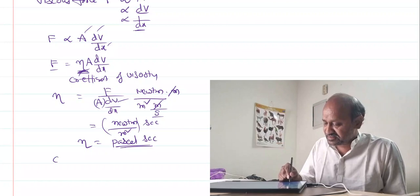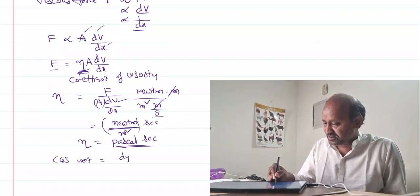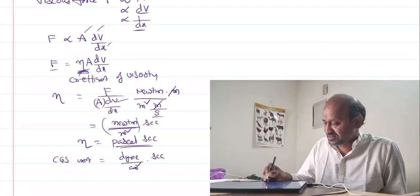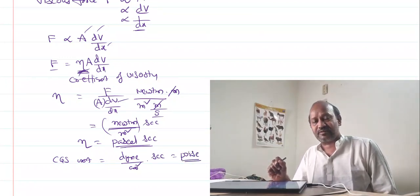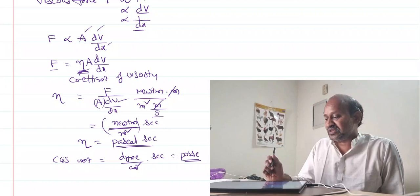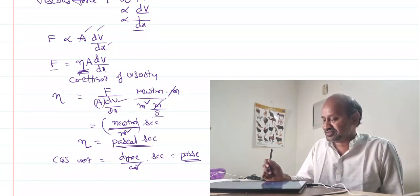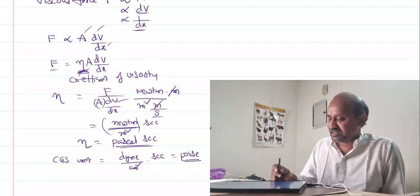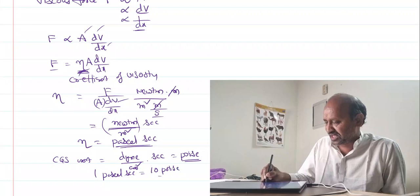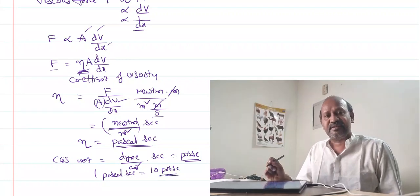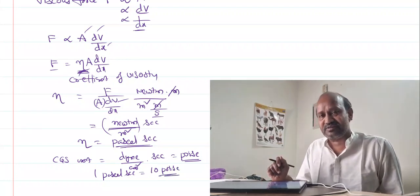If you want to write the CGS unit, it is dyne per centimeter squared per second. In the name of scientist Poiseuille, who contributed a lot to fluid dynamics, the unit is called the Poise. You can find the conversion factor: 1 Pascal second equals 10 Poise. I am leaving that calculation for you — if you are unable to do it, let me know and I will do a video for that.